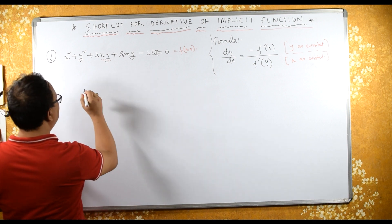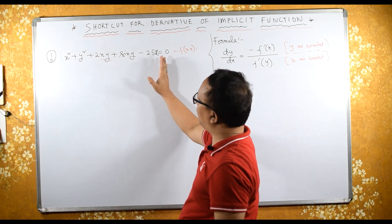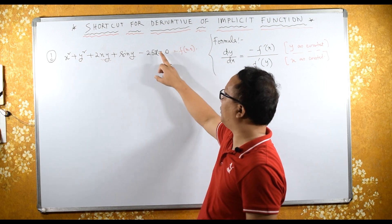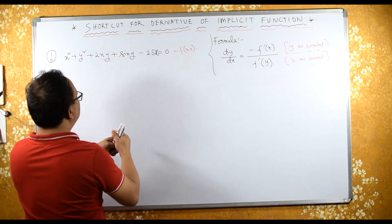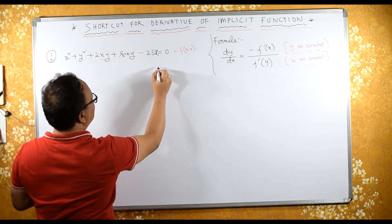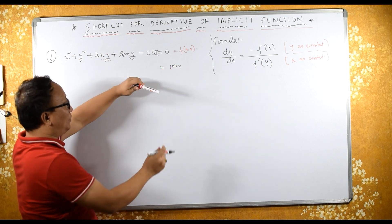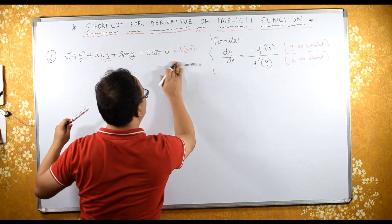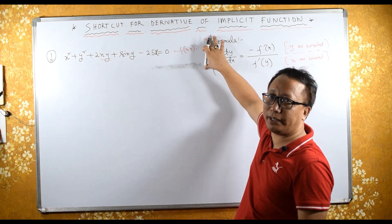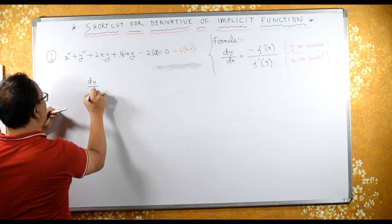Within a few seconds you can write the answer. The main thing is that all variables — the function of x and y — must be written on one side equal to 0. If the equation is given as something equal to, for example, 10xy, you move everything to one side so it equals 0. Once it equals 0, this shortcut is applicable.